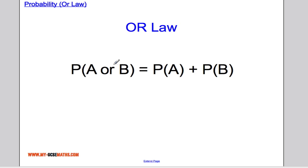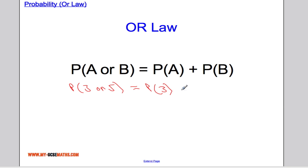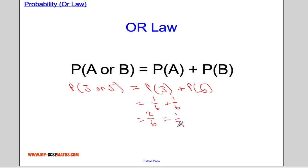The OR law for probability basically states that if I want the probability of A or B happening, I just add the probability of A with the probability of B. For example, suppose I want the probability of getting a three or a five when rolling a die — it's equal to the probability of getting a three plus the probability of getting a five, which is one sixth plus one sixth, giving two sixths or one third.